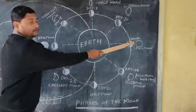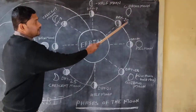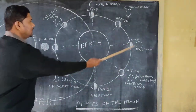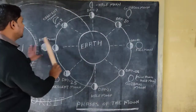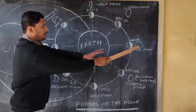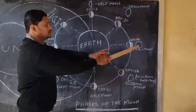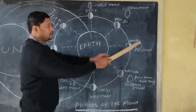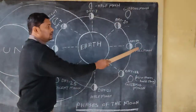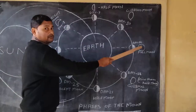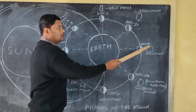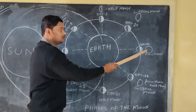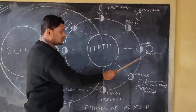Then again, from day ten — day eleven, twelve, thirteen, fourteen — on day fourteen we are getting the sunlight directly. The moon is getting the sunlight and we could see it fully. That is known as the full moon. The whole part of the moon we are able to see is known as the full moon.